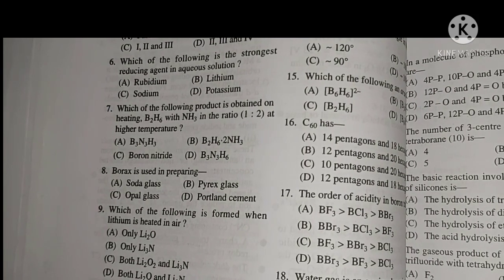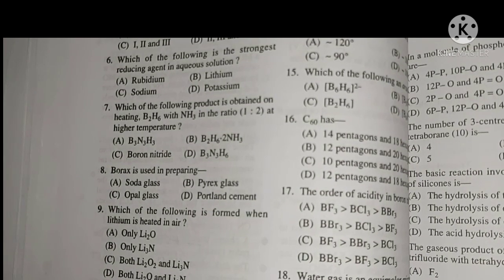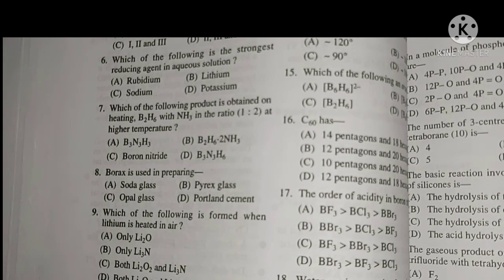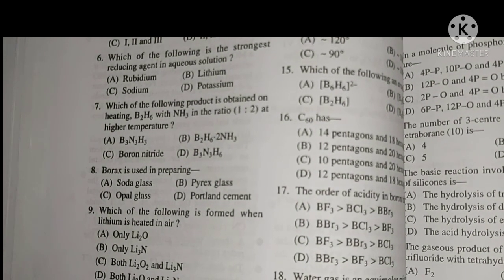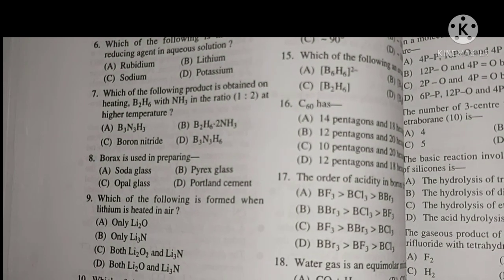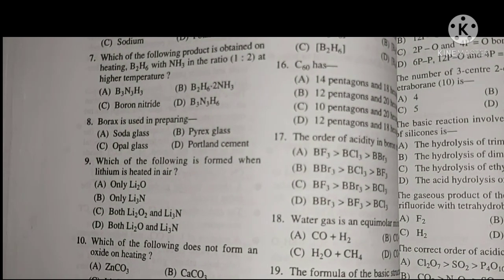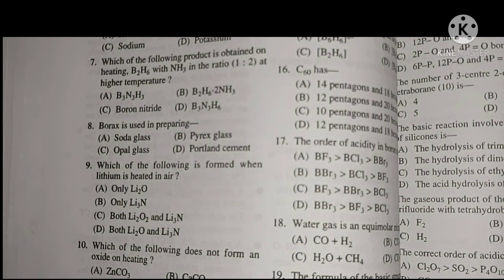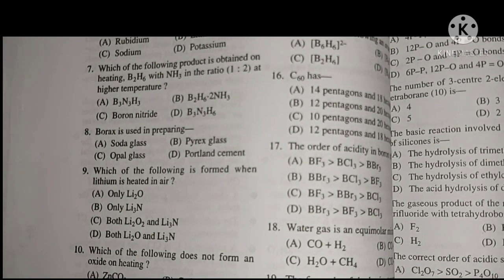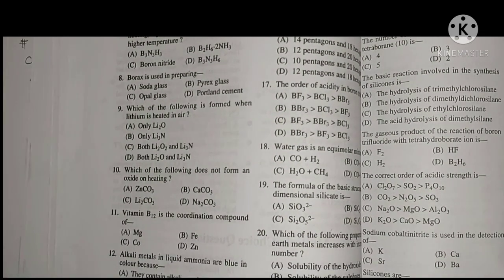Which product is obtained on heating B2S6 and ammonia in ratio 1:2 at higher temperature? Another question: Which is formed when lithium is heated in air? We think it is Li2O, but it is actually Li3N, lithium nitride.